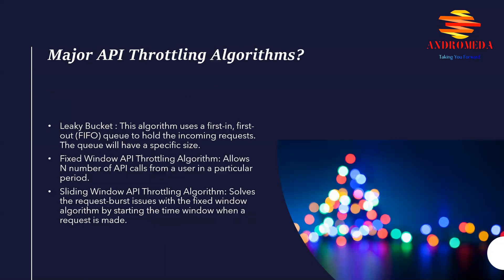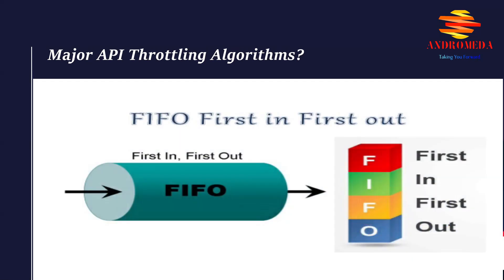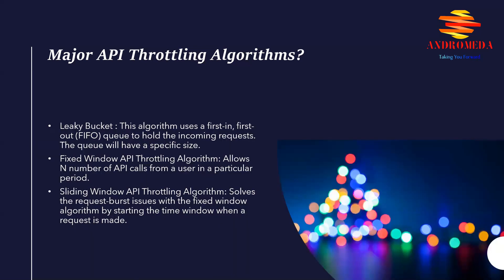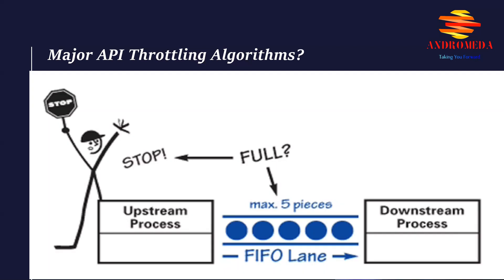The first major algorithm is the leaky bucket API throttling algorithm. This algorithm uses a first-in-first-out queue to hold the incoming requests. The queue will have a specific size. When a new API call request is received, it is added to the end of the queue. At regular intervals, this algorithm removes a request from the front of the queue and processes it. If a new request comes when the queue is already full, the request is discarded.